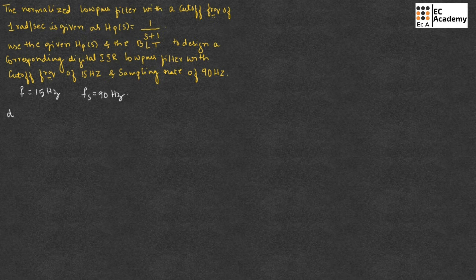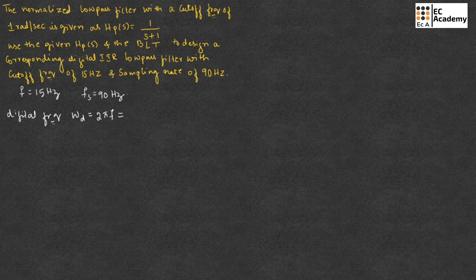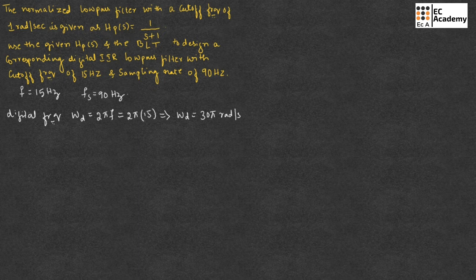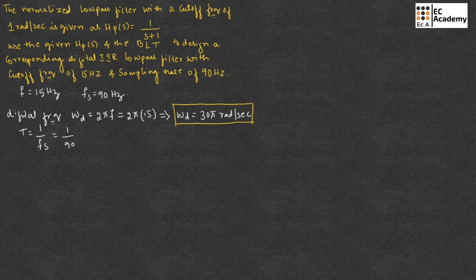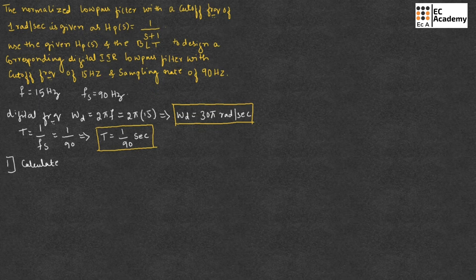First, we need to find the digital frequency. The digital frequency omega_d is given as 2*pi*f. Substituting f equal to 15 Hz, we get omega_d equal to 30*pi radians per second. Also, the sampling period T is given as 1/F_s, and since F_s is 90 Hz, T equals 1/90 seconds.